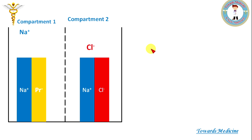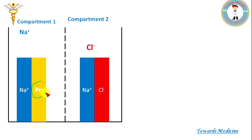Now we discuss Donnan membrane equilibrium. In this case there are two compartments that are separated by a semi-permeable membrane, and on one side of the membrane there is a non-diffusible ion or protein.